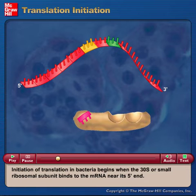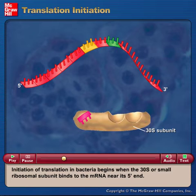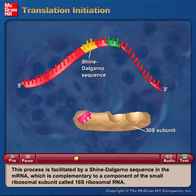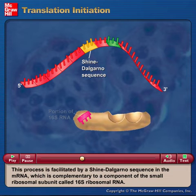Initiation of translation in bacteria begins when the 30S, or small ribosomal subunit, binds to the mRNA near its 5' end. This process is facilitated by a Shine-Dalgarno sequence in the mRNA, which is complementary to a component of the small ribosomal subunit called 16S ribosomal RNA.